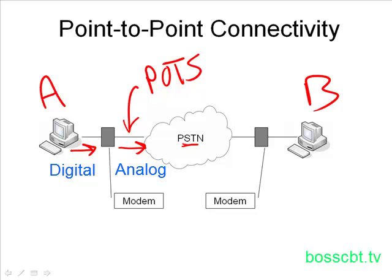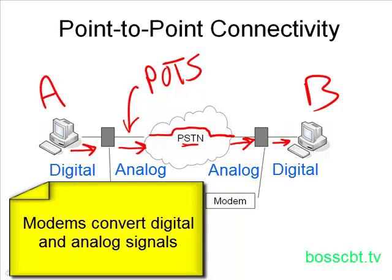The PSTN is a circuit-switched technology as opposed to packet-switched. So quite literally, a point-to-point connection will be established through the PSTN for these two computers. The PSTN is going to end up sending that analog signal to the other modem, and then on that side, the modem will take that analog signal, convert it to a digital signal, and send it to PC B so that PC B can actually understand it. And of course, this happens in the other direction as well when PC B wants to send information to PC A.